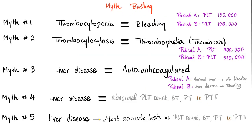Before we talk about liver disease, let's bust some myths. Myth number one: thrombocytopenia is the same thing as increased risk of bleeding. For instance, if patient A has a platelet count of 150,000 and patient B has 120,000, therefore patient B is more likely to bleed — what a bunch of nonsense. Clinically speaking, we do not start to care about your platelet count until it drops below 50,000, and even then, you might not bleed.